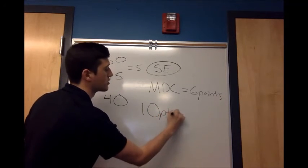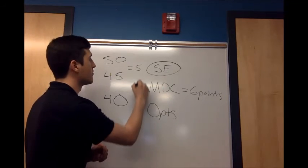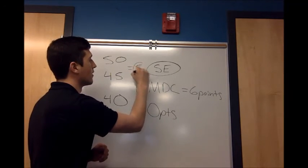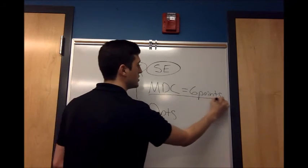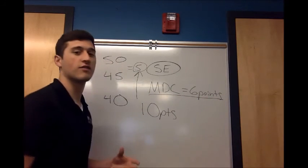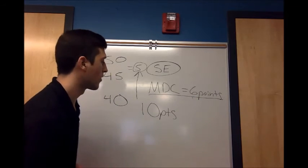So now we can attribute that to the intervention actually taking place because we're outside of the five points of standard error for the DASH. And our Minimal Detectable Change is six. So we know that the intervention has to be taking place at six points of difference.